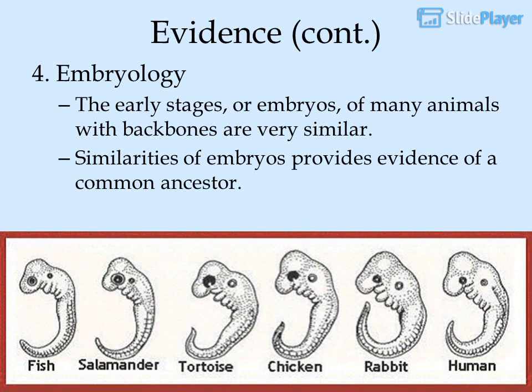Evidence 4 — embryology: the early stages, or embryos, of many animals with backbones are very similar. Similarities of embryos provide evidence of a common ancestor.